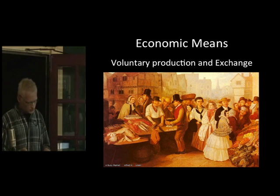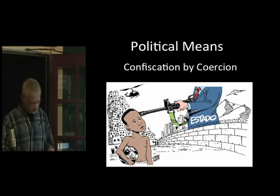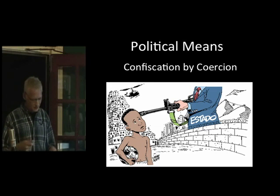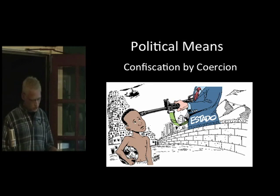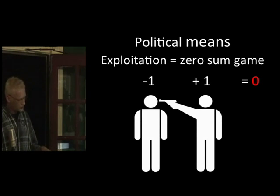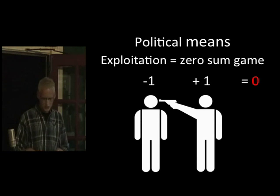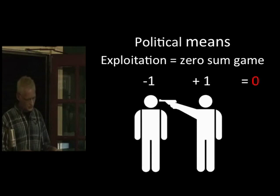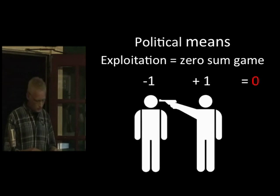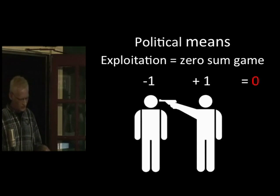The other means of acquiring wealth is the political means: confiscation by coercion — coercion meaning the threat of violence. This is what a band of highway robbers do. There is no production and peaceful voluntary trade, only exploitation by violence — taking the production of others by force. Exploitation is simply a zero-sum game where one gains at the expense of another, with the aggressor, rather than producing themselves, simply taking by violence what the victim produced. Whether they are a single robber, a band of highway thieves, or a large crowd claiming their violence is legitimate because they call themselves a state makes little difference.